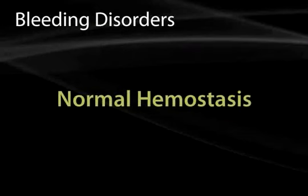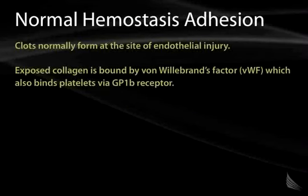Let's begin with a discussion of normal hemostasis. Clotting is something that occurs in us every day. It is a normal process to help repair microvascular and macrovascular injury, and we have primary and secondary hemostasis. The process of normal hemostasis involves both platelet adhesion as well as a protein cascade to generate the formation of a stable fibrin clot.